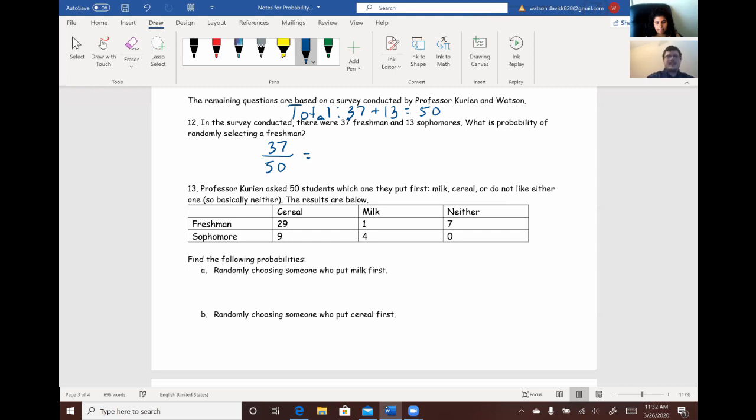And if we want to convert that to a decimal, that would just be 0.74. And that would be our answer. And all you have to do to convert it to a decimal is take that 37 and divide it by 50. You can use a calculator if you want to.